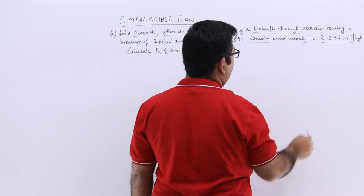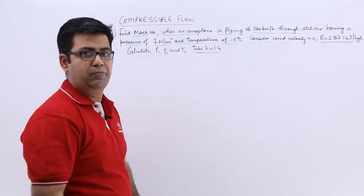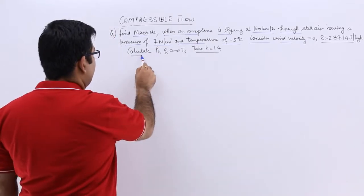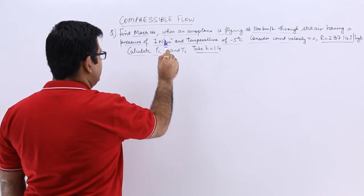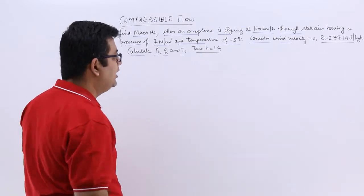Consider the wind velocity 0, the R is 287.14, and we need to find out the stagnation pressure, stagnation density, and stagnation temperature.